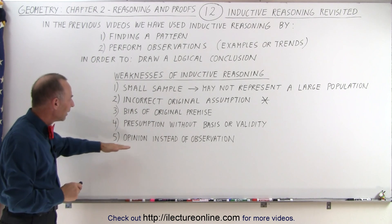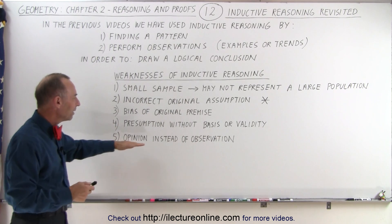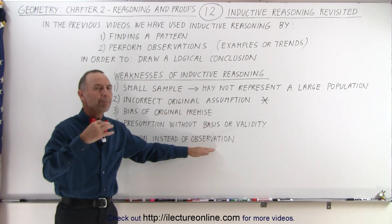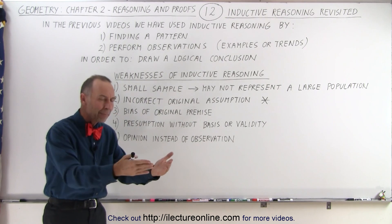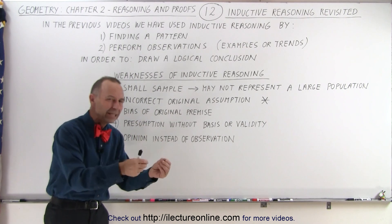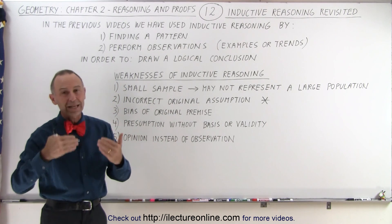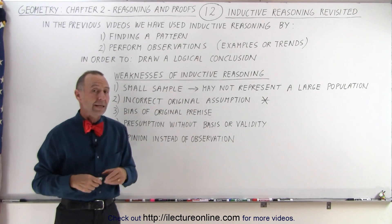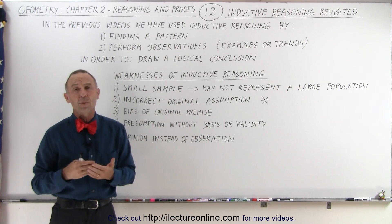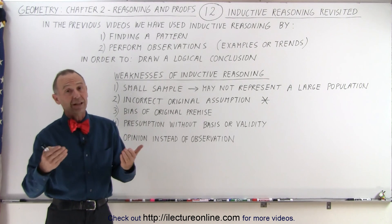And finally, when you make an opinion instead of an unbiased observation, we're looking at an example, we're looking at an experiment, we see what's happening and you draw an opinion rather than strictly taking it for its observation. A good example of that would be if the rooster crows in the morning, every morning, and after that the sun rises,